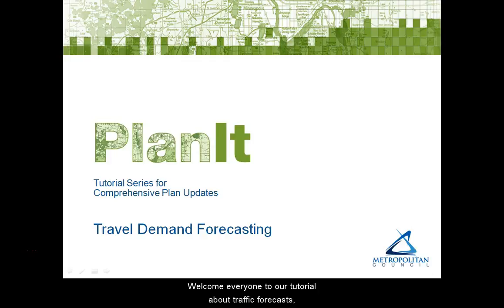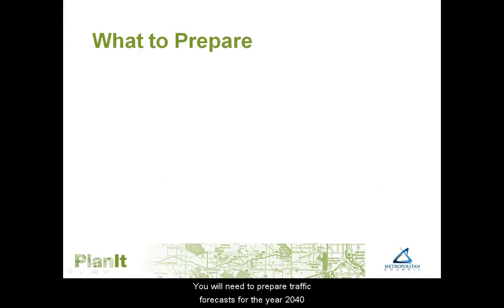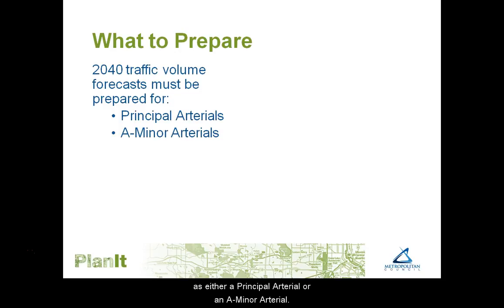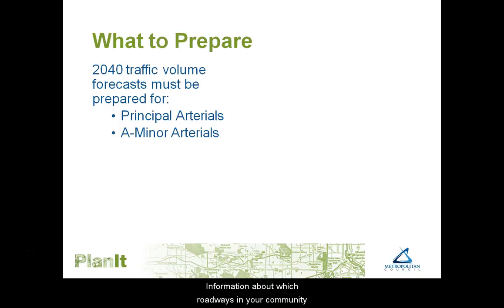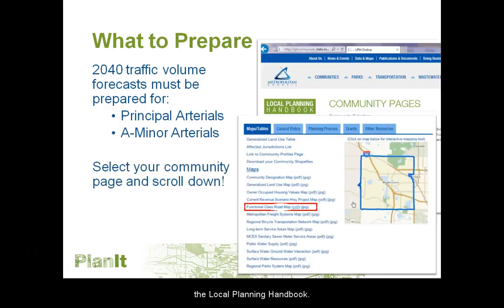Welcome everyone to our tutorial about traffic forecasts, which are required for the transportation element of your comprehensive plan update. You will need to prepare traffic forecasts for the year 2040 for roadways in your community that are identified as either principal arterial or A minor arterial. Information about which roadways have this classification can be found on your community page in the Local Planning Handbook.